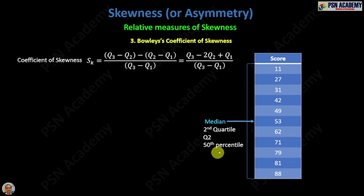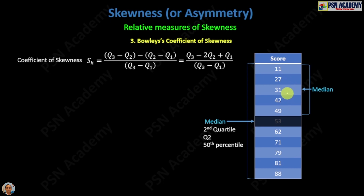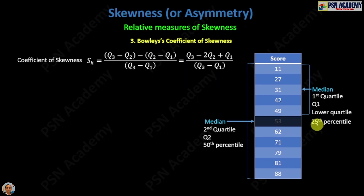Now you omit the middle value and take the range from the first to the fifth score, find the median from there, and that is 31. This median is called the first quartile, also written Q1, and is also called the lower quartile or the 25th percentile. For those who are not clear on percentile, if you want to calculate the percentile for 53, you have to count the numbers below 53.